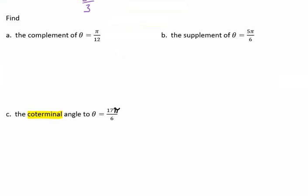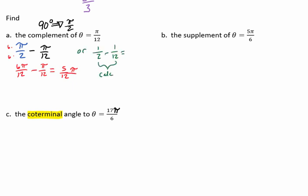Now let's find some complements, supplements, and a coterminal. Remember that a complement means two angles that add up to 90 degrees. In radians, 90 degrees is pi over 2. So to find the complement of theta equals pi over 12, we take pi over 2 minus pi over 12. We need common denominators, so we multiply both numerator and denominator of pi over 2 by 6, giving us 6 pi over 12 minus pi over 12, which equals 5 pi over 12. Another way is to drop the pi, compute one-half minus one-twelfth on the calculator to get 5 over 12, then put the pi back.